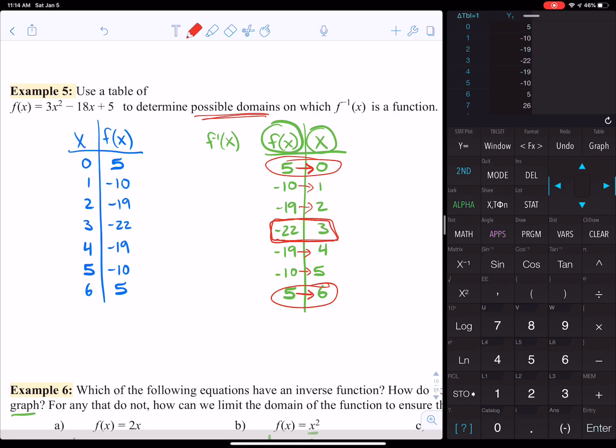So what we can tell is that if we keep the domain either above negative 22, so going this direction, or below negative 22, we would be on the safe side. So we would not run into those values that don't have a unique y.